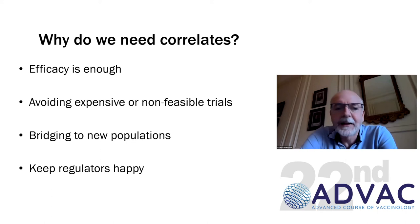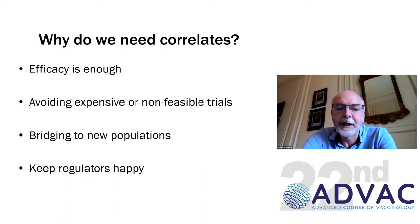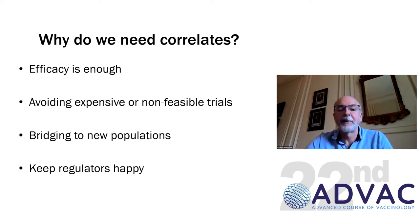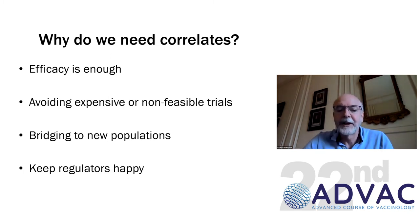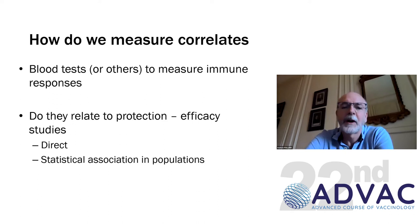So why do we need correlates? Certainly efficacy is enough in vaccine development — if you can show that a vaccine works, it can be licensed and used on a population. But if you have a correlate of protection, that does allow bridging to new populations. You can avoid very large-scale expensive trials, and it's also very helpful from a regulatory perspective to have an immunological mechanism that correlates with protection.